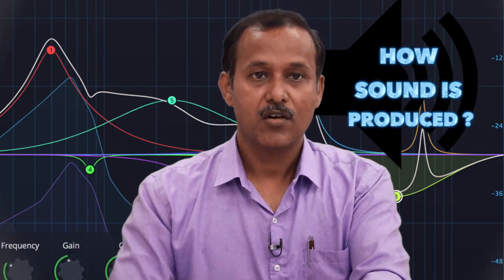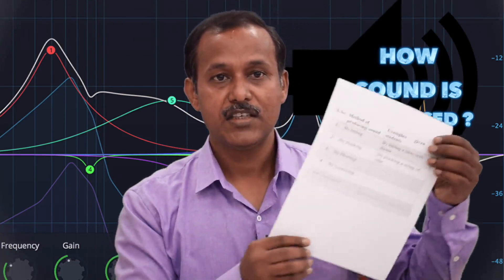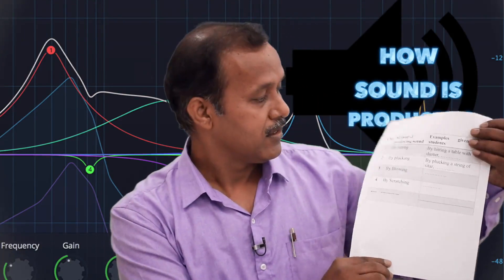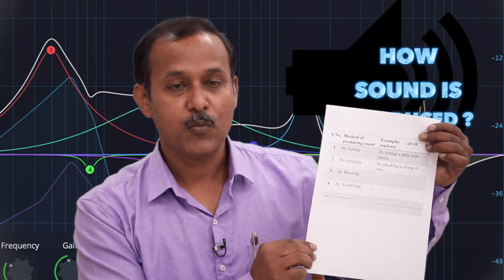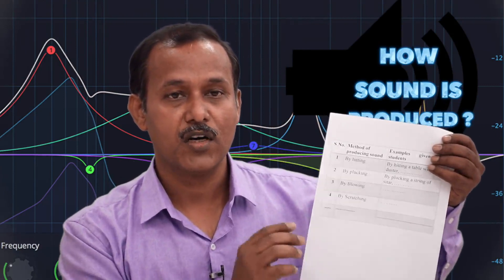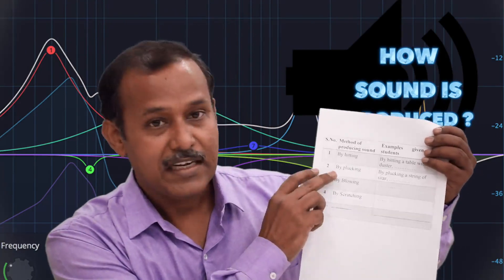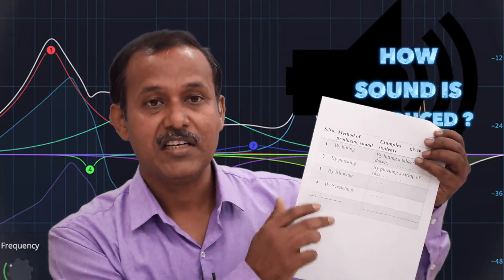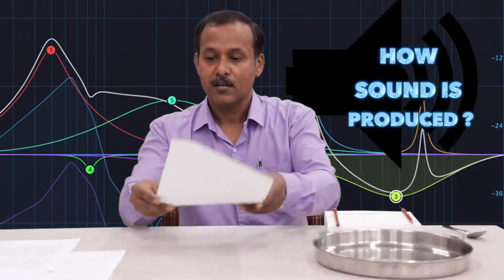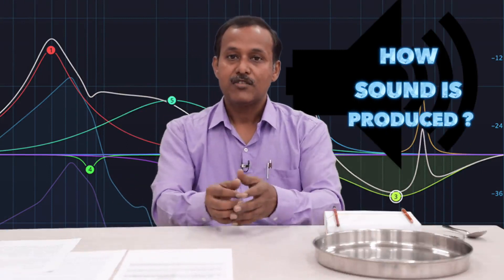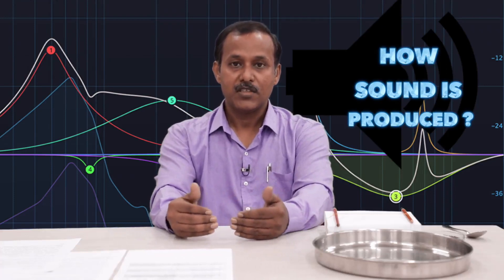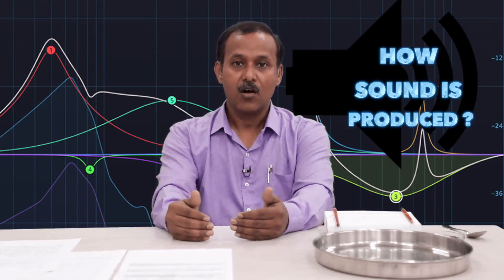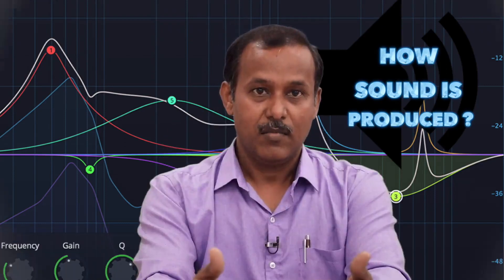You can ask your students to record their observations in a table. As a teacher and facilitator, you can group those observations into broader categories like: by hitting, by plucking, by scratching, etc. In this way, students will be able to record different types of observations from their surroundings or by actively engaging in experiments.